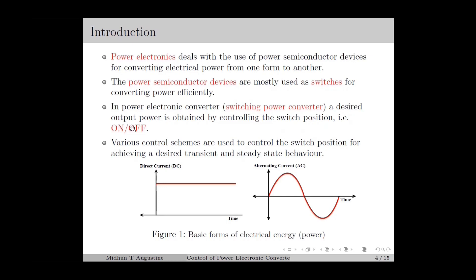In a power converter, a desired output power is obtained by controlling the switch position. The switch can take two positions, either on or off. For controlling the switch position, we use various control schemes in which the objective is to achieve a desired transient and steady-state behavior of the power converter. In this lecture series, we will be mainly focusing on the design of these control schemes for power converters.